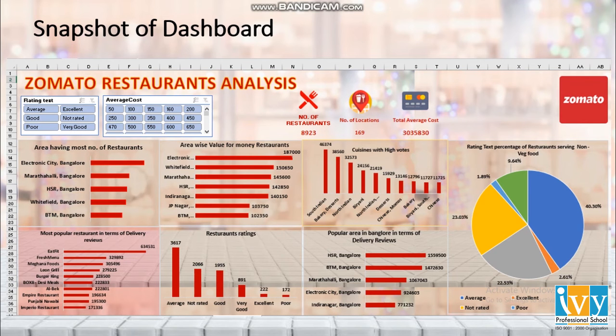The dashboard has been made from these pivots and charts. Two slicers have been used: rating text and average cost.